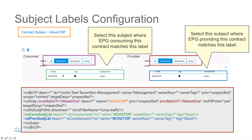For instance, in this case, this configuration with a label monitor will select EPGs that are consuming contracts that have this label on the provided EPG. Similarly, this configuration also says that this subject will be used where EPGs are providing this contract if they have this label on the subject EPG label configuration.